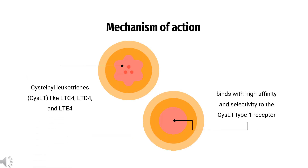How does Zileuton work? Leukotrienes are substances that induce numerous biological effects, including augmentation of neutrophil and eosinophil migration, neutrophil and monocyte aggregation, leukocyte adhesion, increased capillary permeability, and smooth muscle contraction. These effects contribute to inflammation, edema, mucous secretion, and bronchoconstriction in the airways of asthmatic patients.